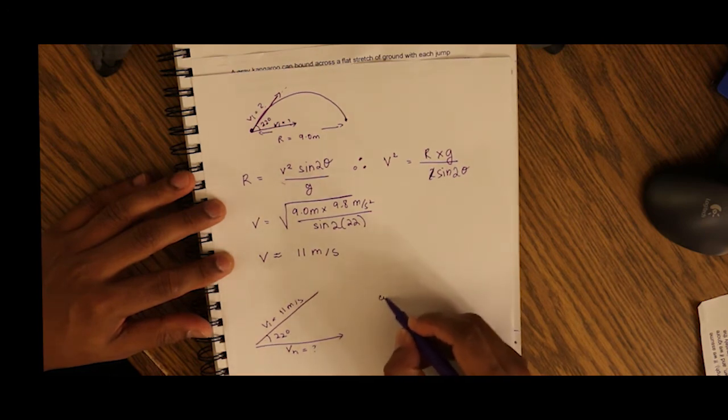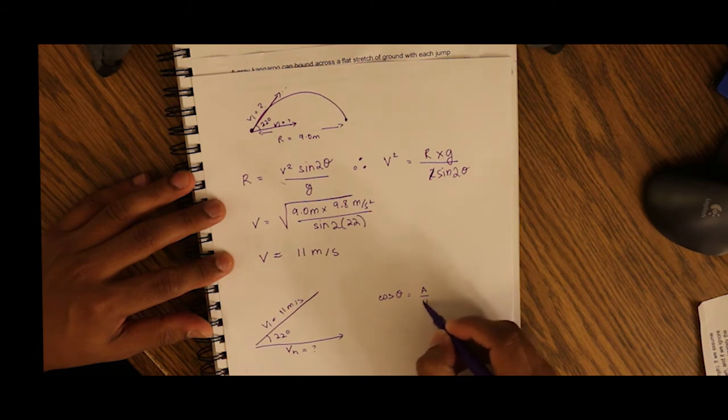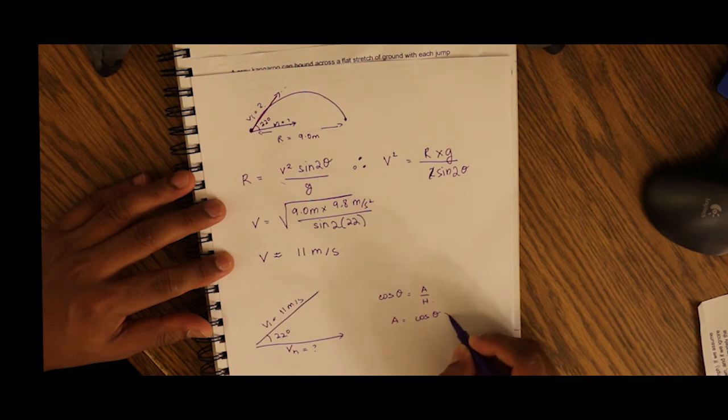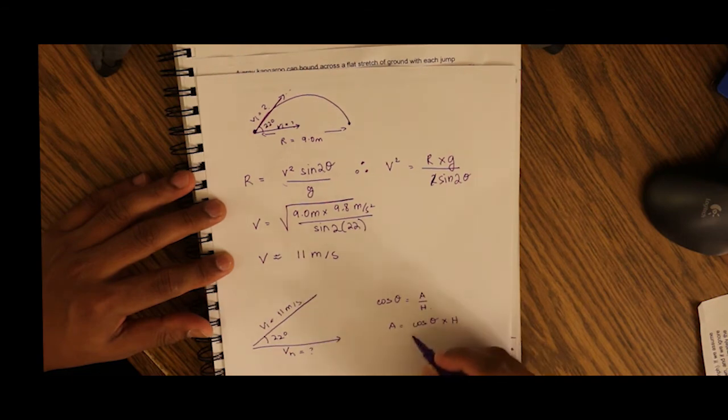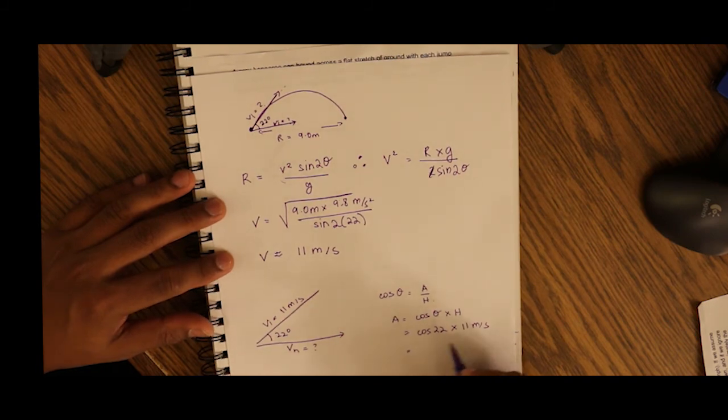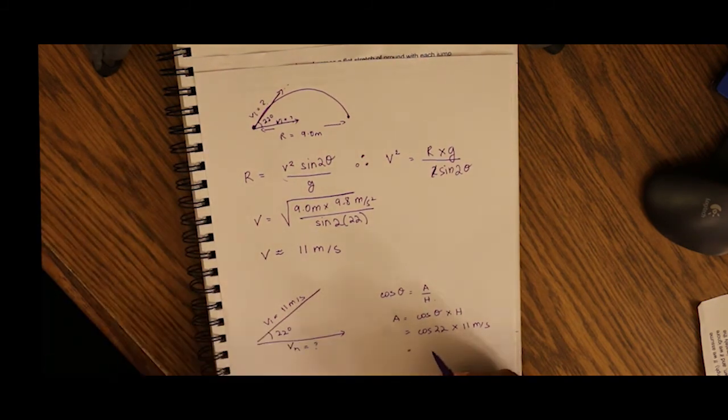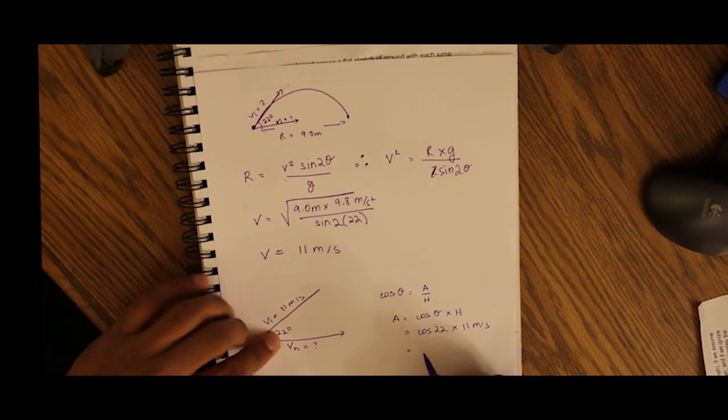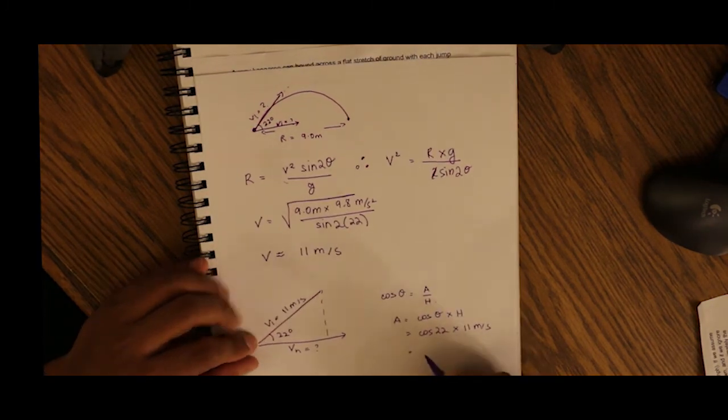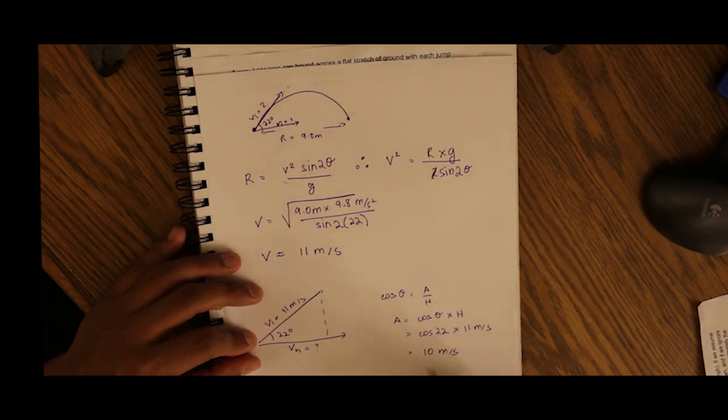We know cosine of an angle is equal to adjacent over hypotenuse. So our adjacent would be the cosine of the angle into our hypotenuse, which is the cosine of 22 degrees into our hypotenuse, which is 11 meters per second. So our adjacent value, which is our v horizontal, would be equal to the cosine times the hypotenuse here, which is approximately 10 meters per second. So our horizontal velocity is 10 meters per second.